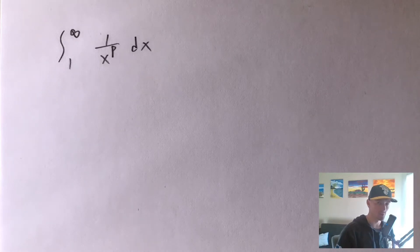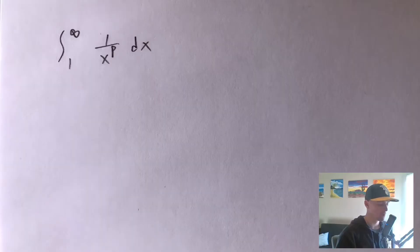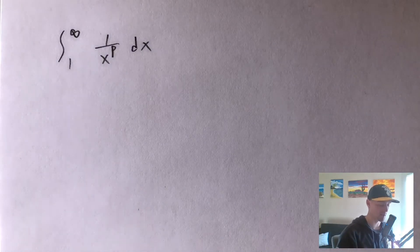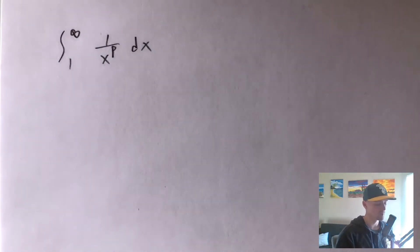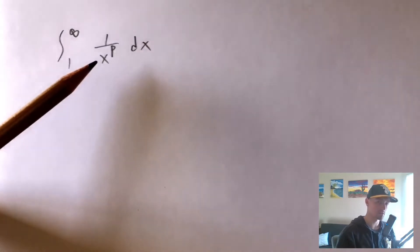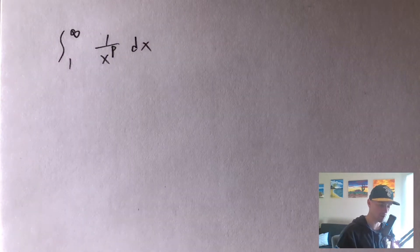Hey guys, Jake here, coming at you with another math problem today. I'm going to be showing you how to find this improper integral, which is the integral from 1 to infinity of 1 over x to the p dx. In this case, p is a constant, so we need to make sure we're treating x as our variable and p as some unknown constant.